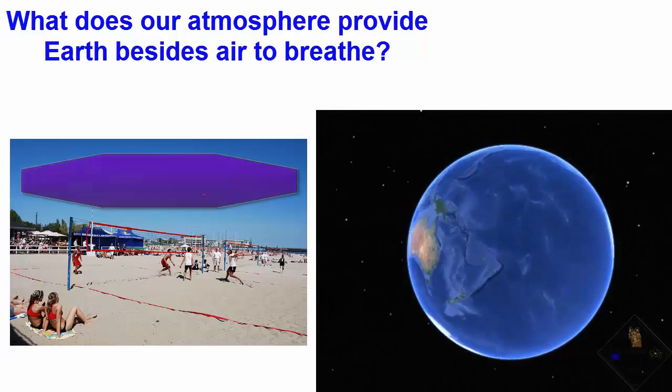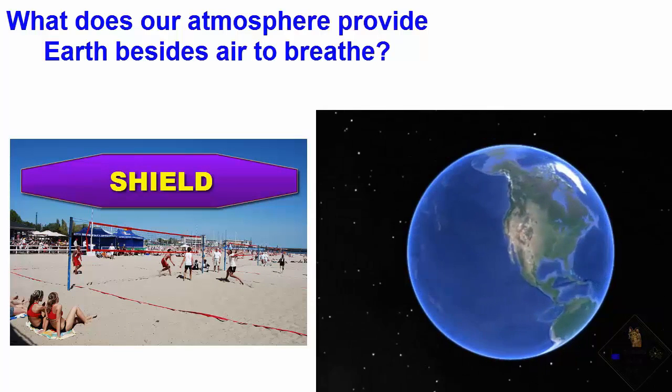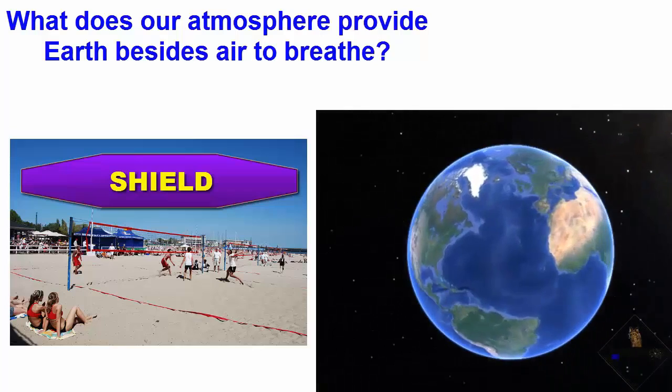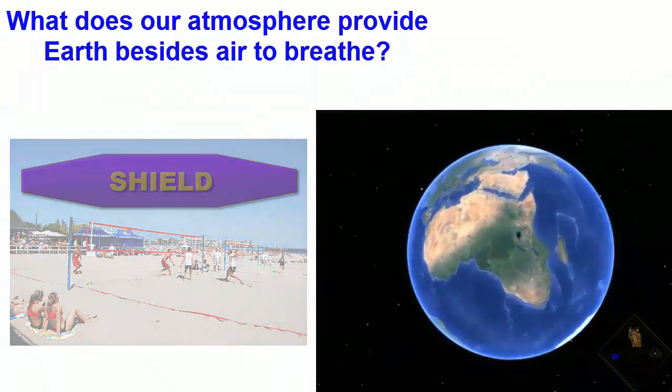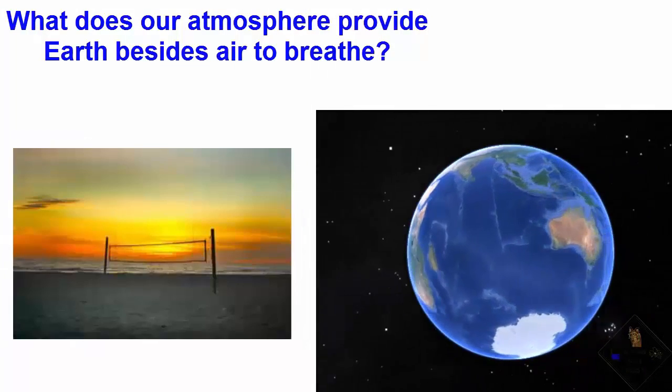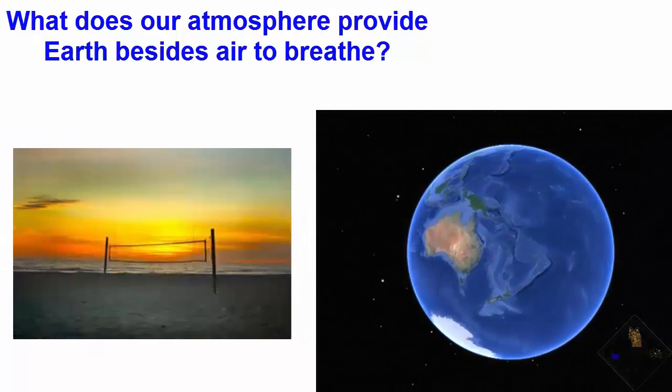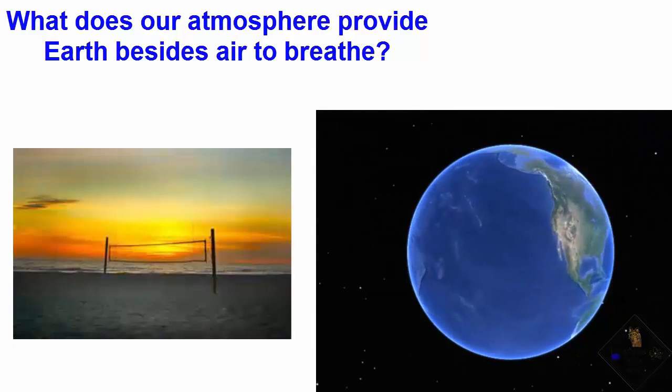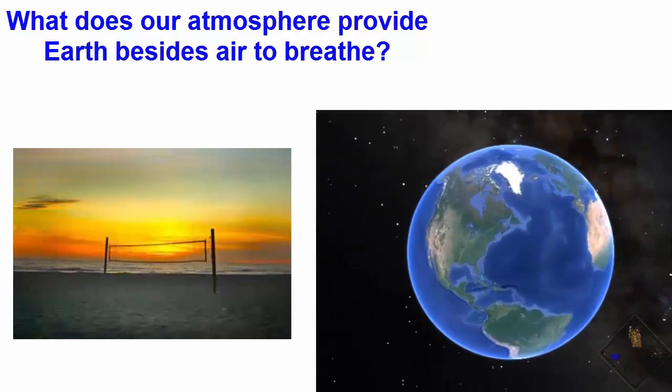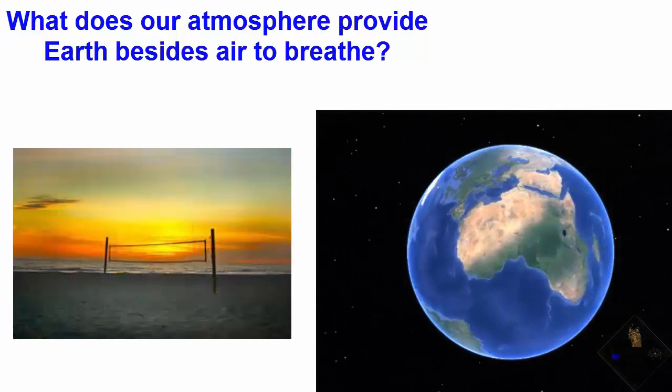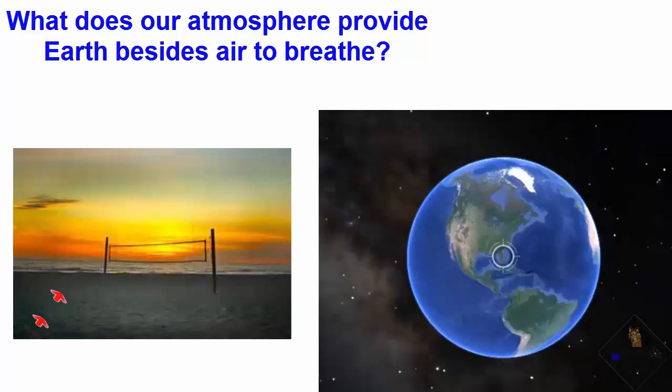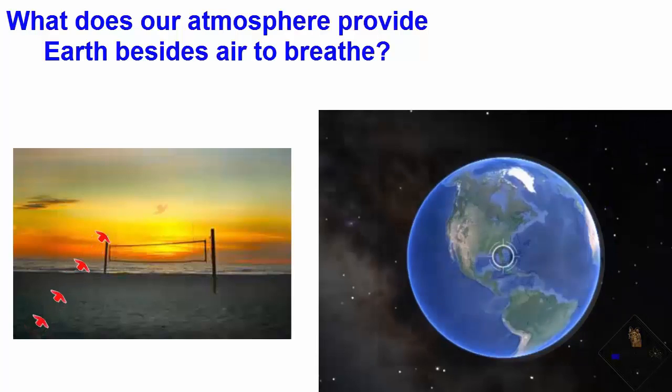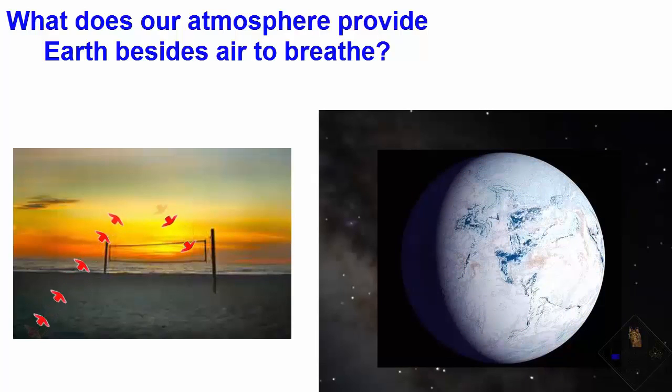During the day, our atmosphere is a shield that blocks the most energetic and harmful rays from the sun. And during the night, Earth's surface is emitting heat absorbed from the sunlight during the day. And certain gases in our atmosphere block heat like a pinball machine and do not let heat easily escape, keeping our Earth from becoming a frozen block of ice at night.